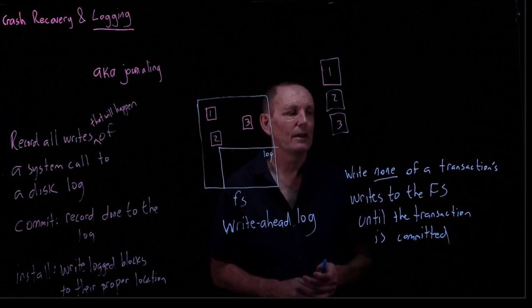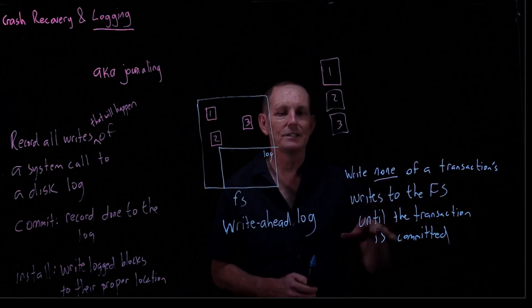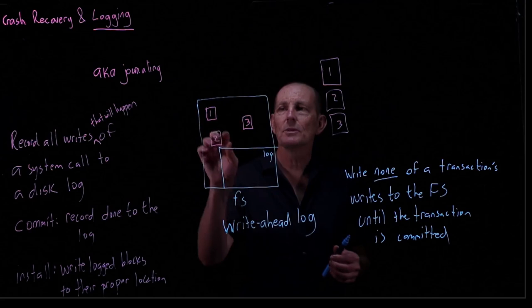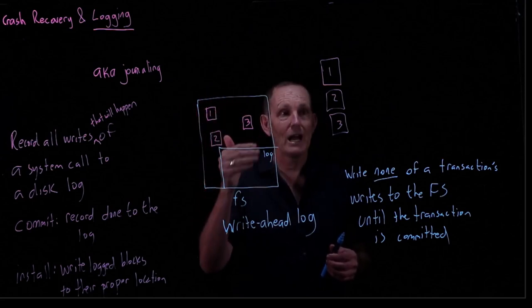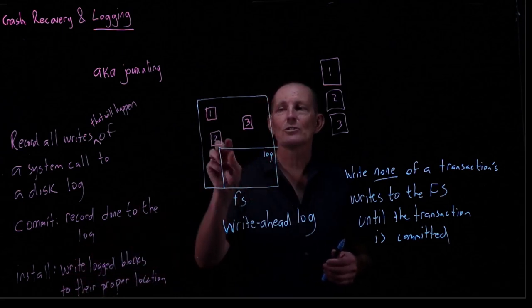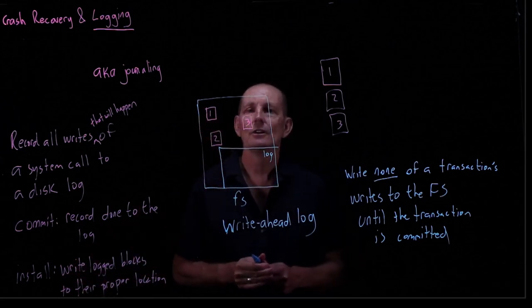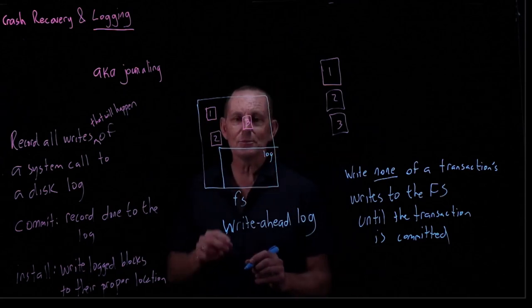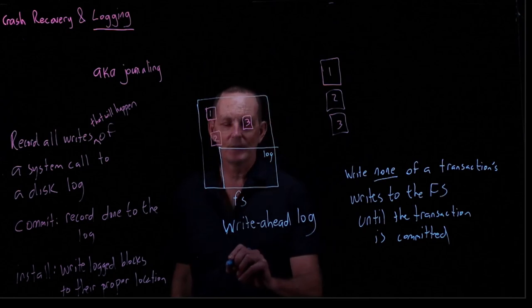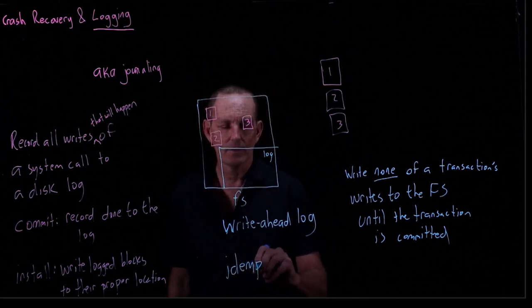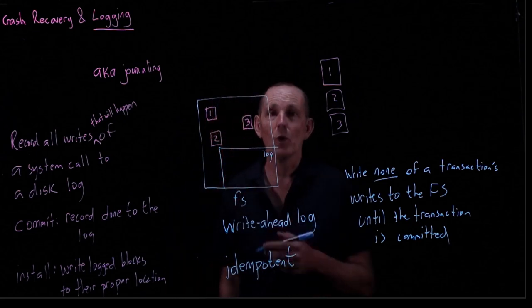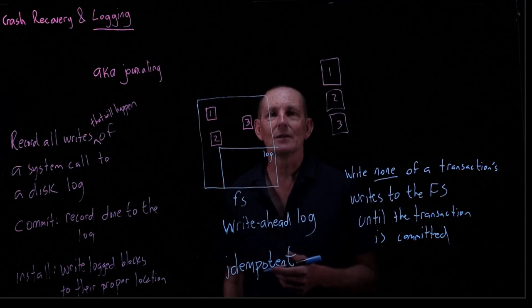And that rule allows us to be prepared for a crash. Because that ensures that we have all of the transactions writes in the log such that they can be replayed. Notice in this replaying, sometimes if we crashed while we were replaying, or installing, if we crashed while we were installing, we might reinstall certain disk blocks. That's okay. That's because writing a disk block from the log into the file system is what's called idempotent. Idempotency just means that you can do it more than once, and you'll end up with the same result.